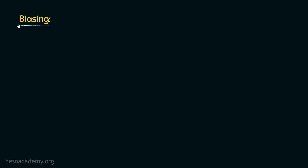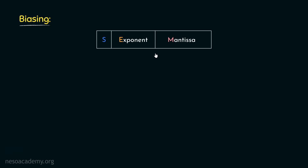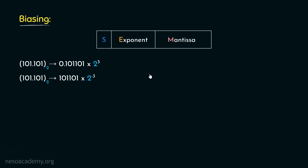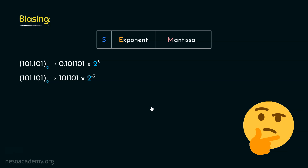Let's try to understand the biasing technique now. We are going to store our binary value in a fixed memory space where the first bit is dedicated for the sign of the entire number, thereafter some bits for the exponent portion, and finally the remaining bits for mantissa. Now for the entire number, this bit will represent the sign. However, we observed earlier that the exponent can also be signed — so the question is, how are we going to represent the exponents?